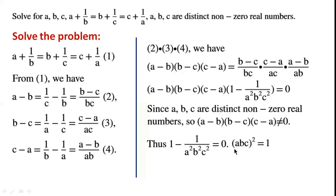Thus 1 minus 1 over A squared B squared C squared equals 0. By rearranging and simplifying the equation, we can write ABC squared equals 1, so ABC equals plus or minus 1.